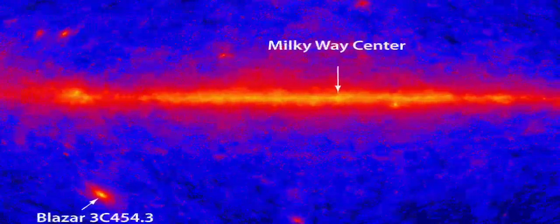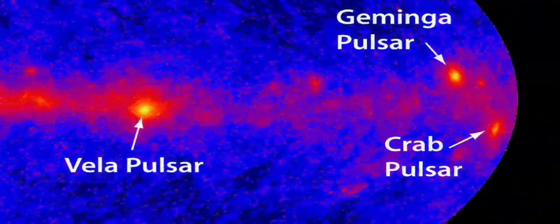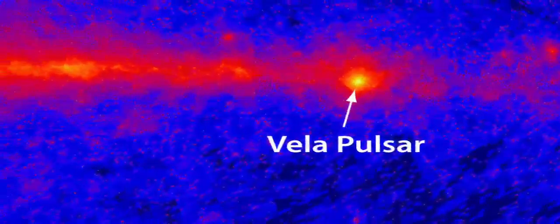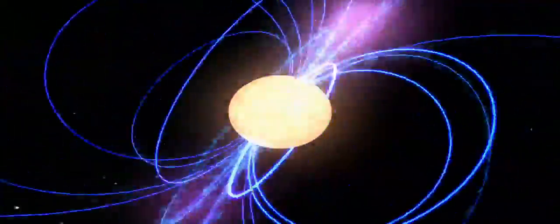With our gamma ray vision, some sources glow especially brightly. These are pulsars, the dense, fast spinning and intensely magnetic leftovers of exploded stars. The veil of pulsar is the brightest persistent source in the gamma ray sky.